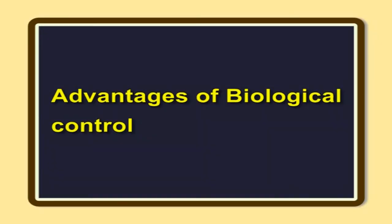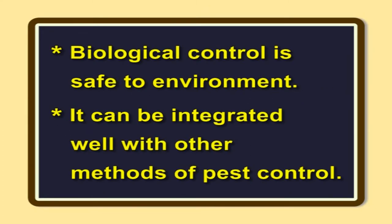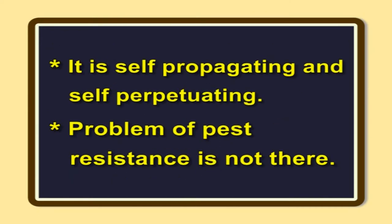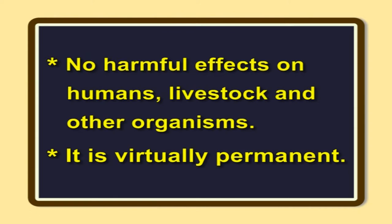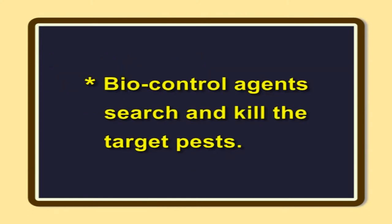Advantages of biological control. Biological control is safe to the environment. It can be integrated well with other methods of pest control. It is self-propagating and self-perpetuating. The problem of pest resistance is not there. No harmful effects on humans, livestock, and other organisms. It is virtually permanent. Biological control agents search and kill the target pests.